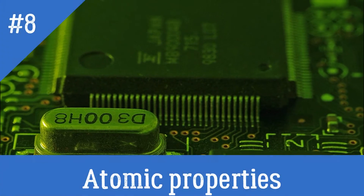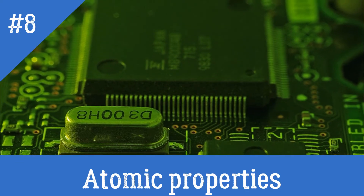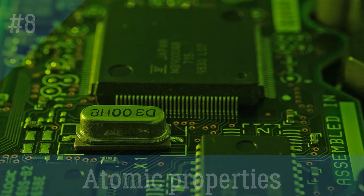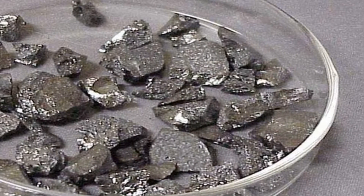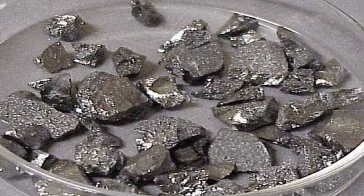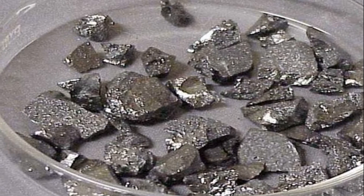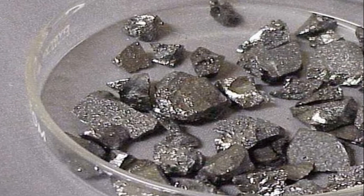8. Atomic properties: The metalloids are very diverse in their atomic characterization. There are some with great atomic weights such as polonium (127.6) and others with smaller weights such as boron (10.81) and silicon (28.08). The same happens with their densities, ranging from 2.37 g/cm³ for boron to 9.32 g/cm³ for polonium, and with their electronic configuration in the last layer: 3 for boron, 4 for silicon, 5 for arsenic, 6 for polonium, 7 for astatine.